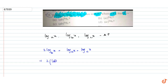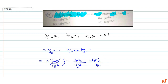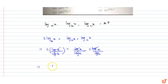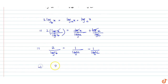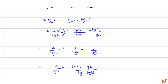Applying the change of base formula, log x to the base A plus log x to the base C equals 1 upon log A plus 1 upon log C. So, twice of log B is equal to log C plus log A, upon log A into log C.